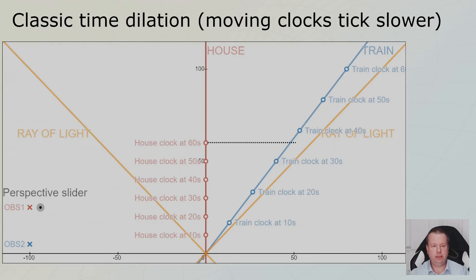And here you see at 60 seconds in the house, the train clock will be somewhere between 30 and 40 seconds. For real. That's the actual truth. And it's in fact 36.